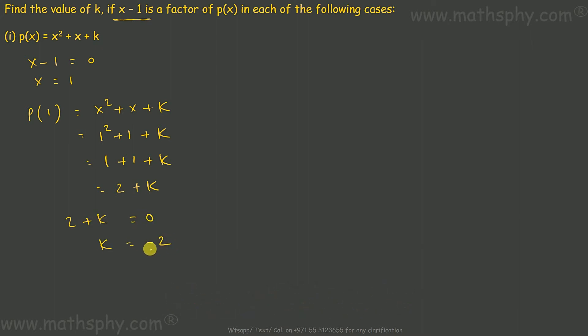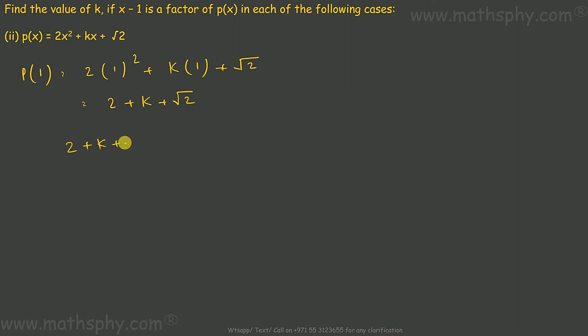This one here, same story. I'll replace x with 1. 2 times 1 squared plus k times 1 plus root 2. This would be 2 plus k plus root 2, which should be equal to 0. Means k will be equal to negative 2 negative root 2. Let's make it more presentable. If we take negative as common, this will be 2 plus root 2. So k is equal to negative bracket 2 plus root 2.